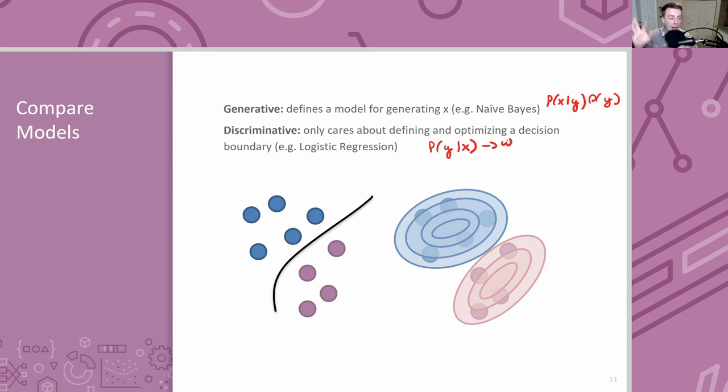This is all we'll cover on Naive Bayes for this video. In today's class we'll talk about a different type of model called a decision tree — a different type of discriminative model that learns decision boundaries in a very different way than logistic regression does.